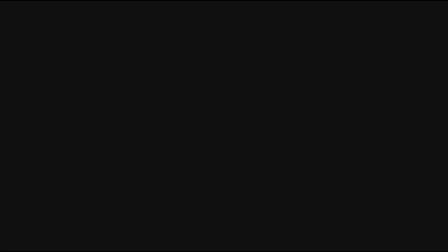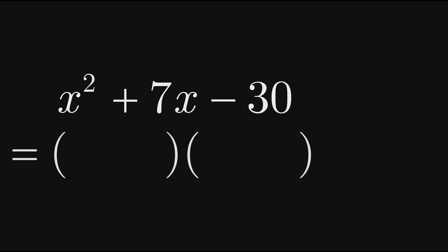For our final example, let's factor x squared plus 7x minus 30. As usual, we start each factor with an x term. Here, we're looking for constant terms that multiply to negative 30 and add to positive 7.